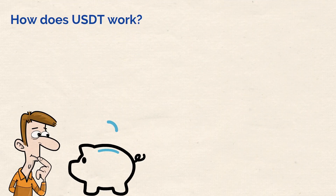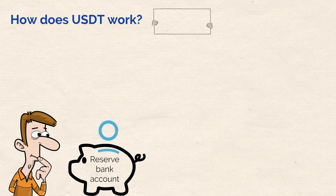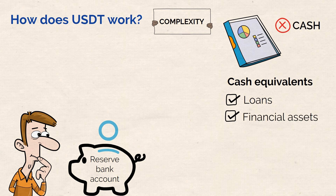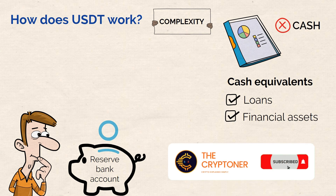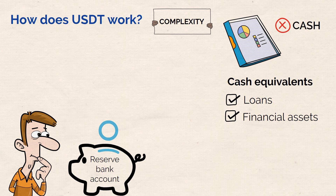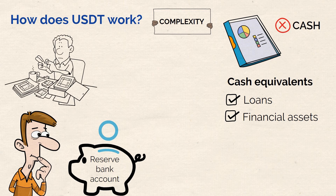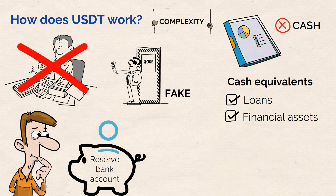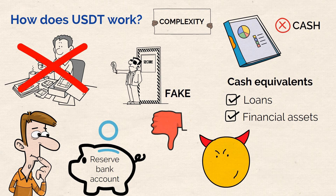However, things are not as straightforward as simply topping up a reserve bank account. Tether's current reserves are not just made up of cash — they can also contain cash equivalents, meaning the reserves can include loans or other financial assets. Notably, USDT's reserves are not fully audited, so it isn't possible to determine the exact breakdown of Tether's reserves. This is one of USDT's potential weaknesses.